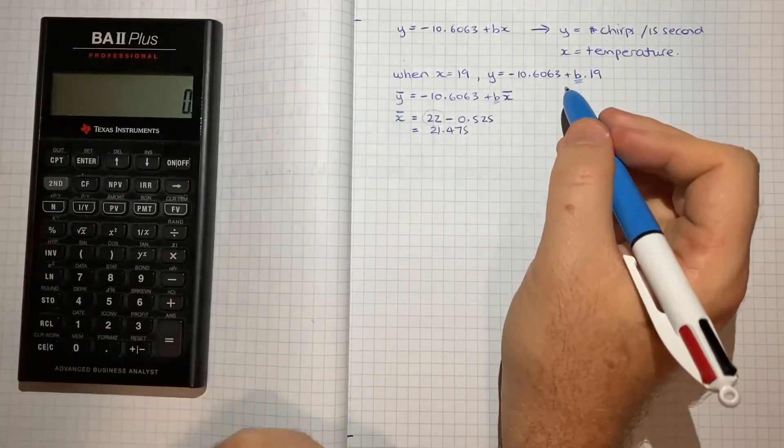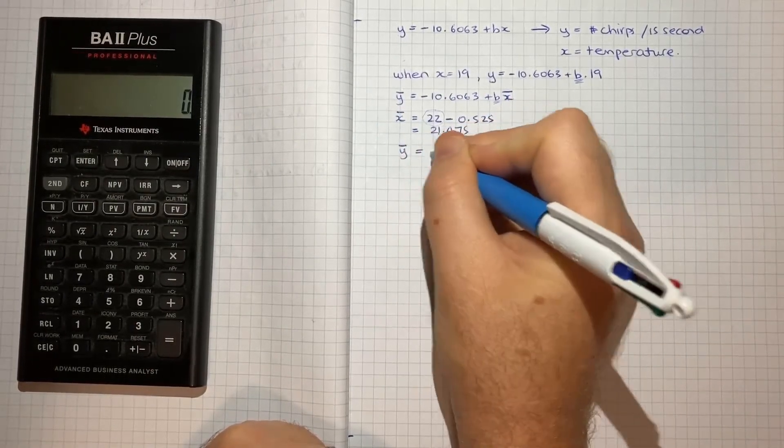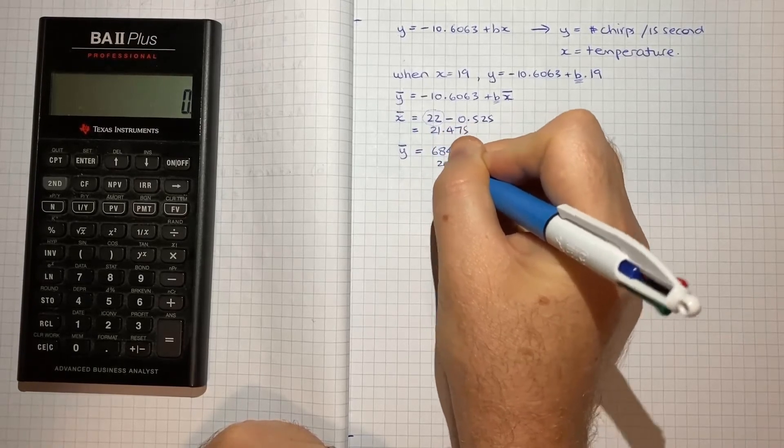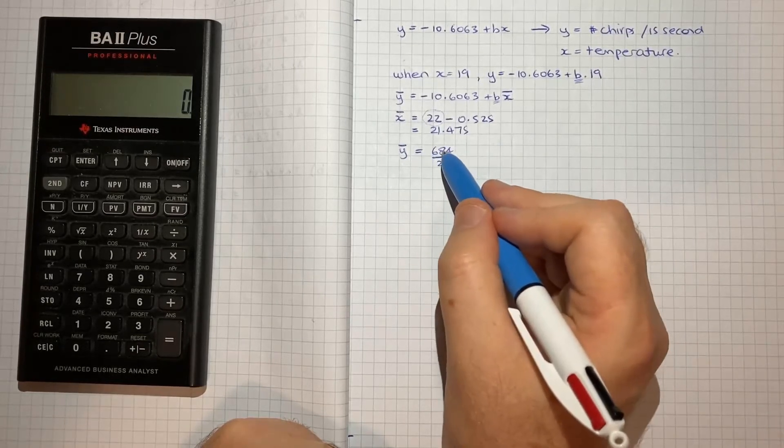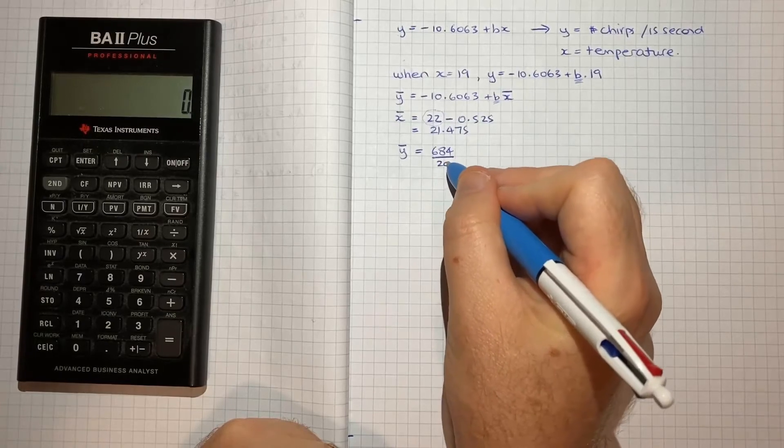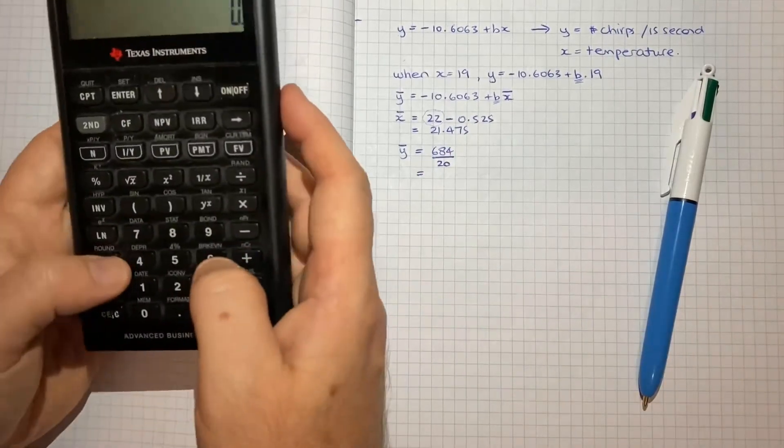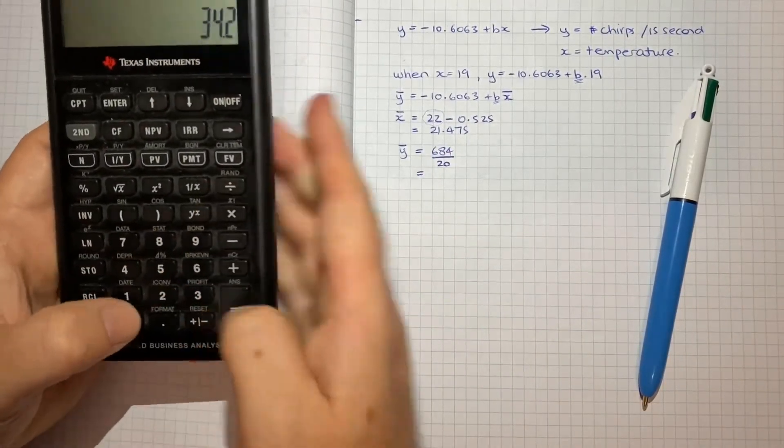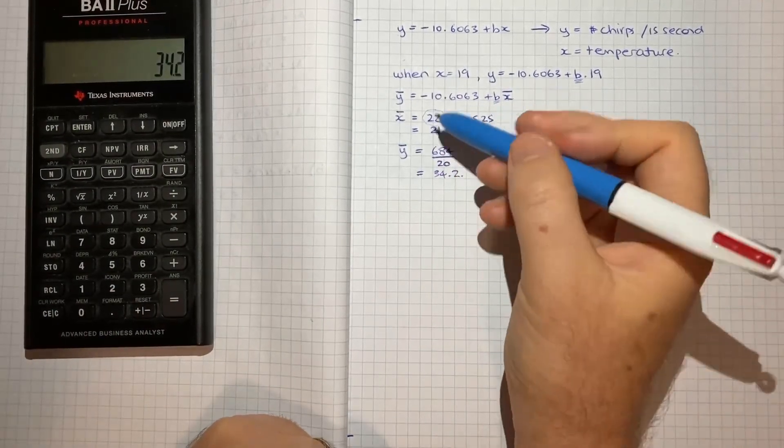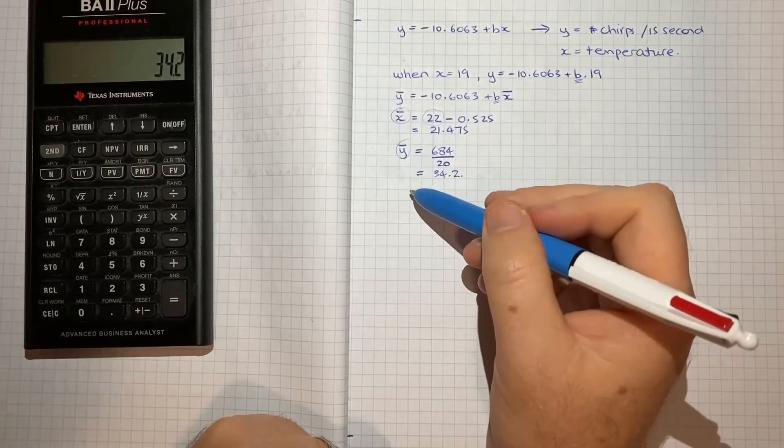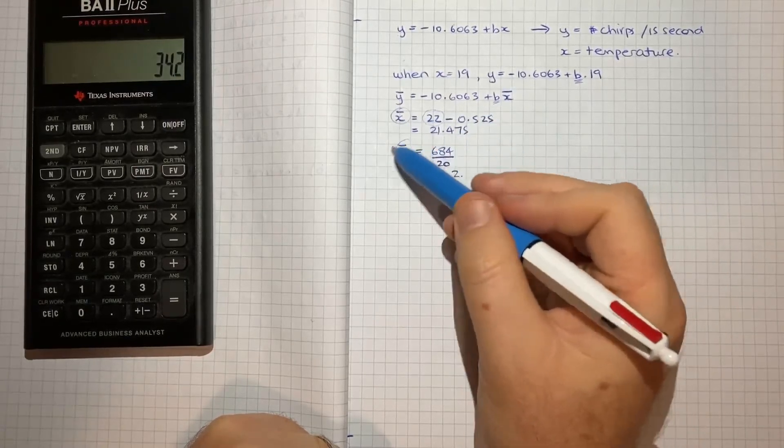Now we just need Y bar and we've got everything we need. Now Y bar is going to be equal to 684 on 20. And we know that because we're told that there were 684 chirps in the 20 samples that were taken. That was the total. So on average the number of chirps in the 15 second intervals is 684 divided by 20 which is 34.2. So again, ultimately getting the X and Y bar, it came down to understanding, well for X bar medians and for Y bar simply the definition of an average.